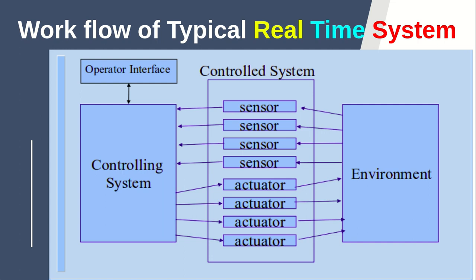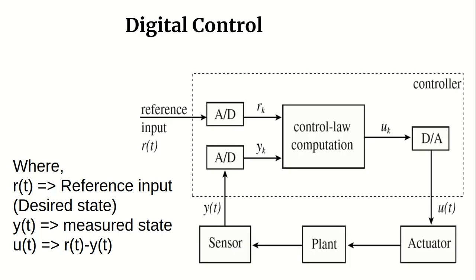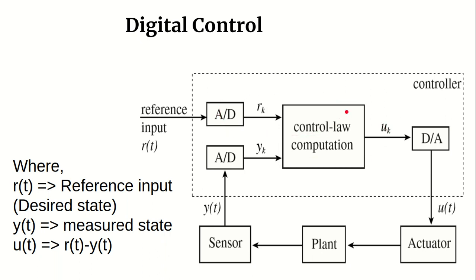The main topic is the digital controller. The digital controller is basically made of six major components, which include the reference input. The controller is the same as the digital converter — it is the main principle.